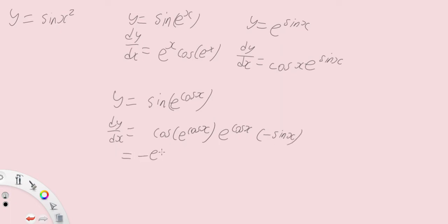And therefore we have -e^(cos x) * sin x * cos(e^(cos x)). Okay, left to right. It's very simple.